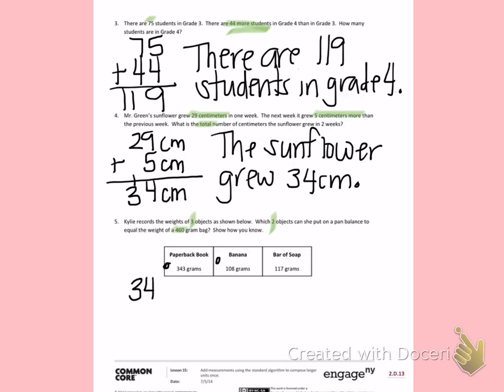So I have 343 grams plus 108 grams. 3 plus 8 is 11. 4 plus 1 is 5. 3 plus 1 is 4, giving me a total of 451 grams. That does not equal 460 grams.